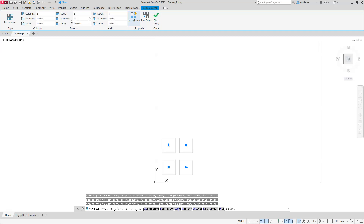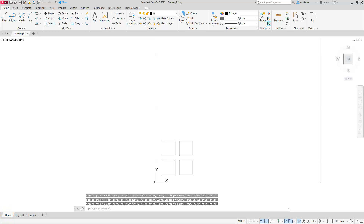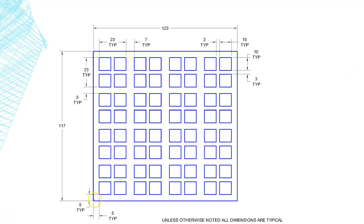You can choose to leave associativity on or turn it off — in this case it doesn't matter because we're not going to modify these squares further. Go ahead and close the array. Jumping back to the drawing: I started this corner at 0,0 which made it easy — you can see where I got the 5 and 5 from. The distance of 13 came from adding the dimension of 10 plus the gap of 3.